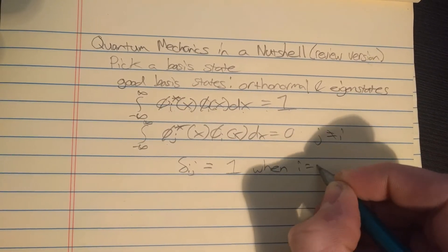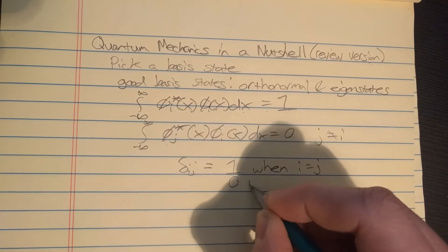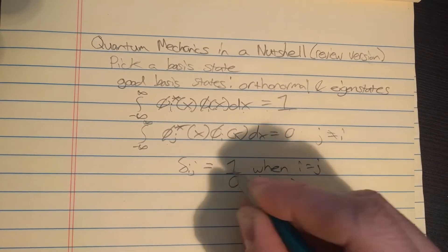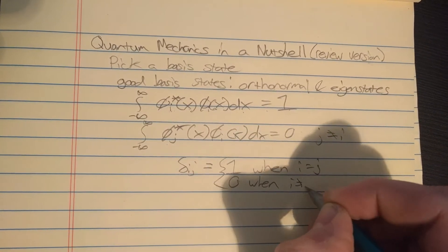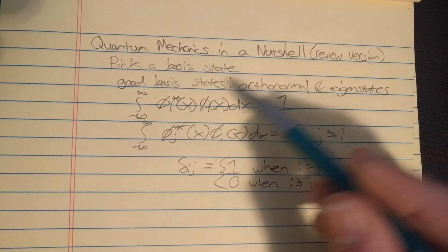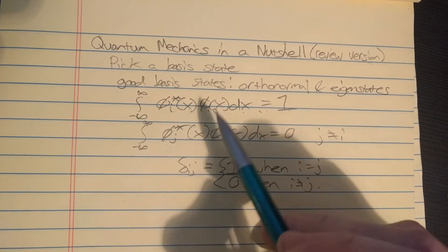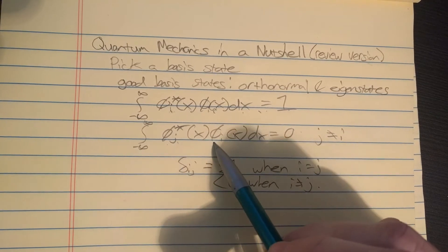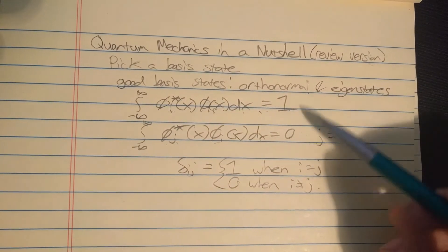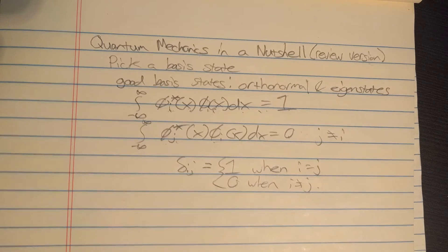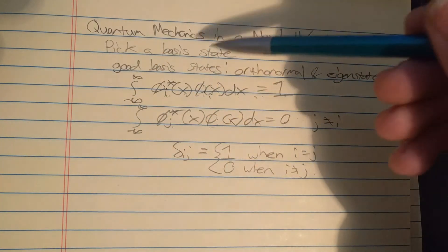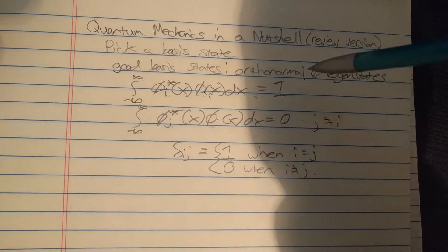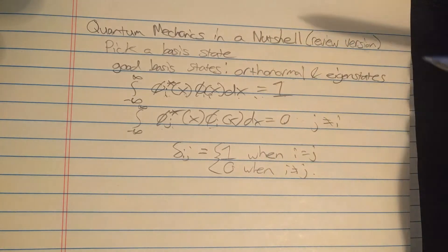Another way to sum up the orthonormality condition is just to say that in general if you take the integral between two states you're going to get the Kronecker delta i sub j, which is equal to one when i equals j or zero when i doesn't equal j.